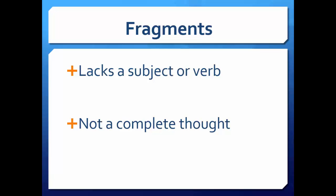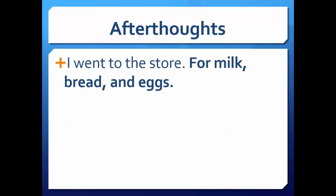Let's look at some examples. The first part, 'I went to the store,' is a sentence because it has a subject — 'I' — and a verb — 'went' — and is a complete thought. The part in bold type, 'for milk, bread and eggs,' is not a sentence.